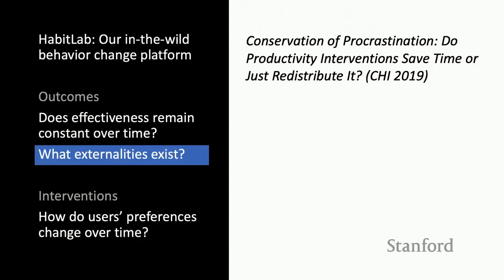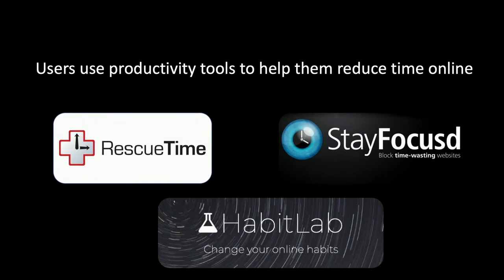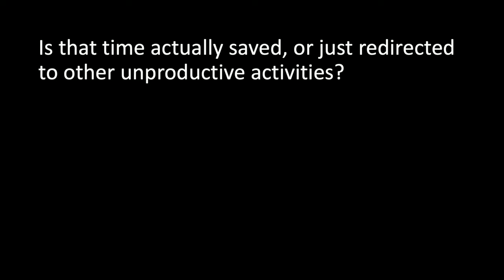The next set of studies looks at whether externalities exist in our system. This is a paper presented at CHI 2019 titled 'Conservation of Cross-Attention: Do Productivity Interventions Save Time or Just Redistribute It?' There are a number of productivity tools to help users reduce time online, including RescueTime, StayFocused, and our own HabitLab. Our question is: is the time we save actually saved, or is it just being redirected to other unproductive activities?